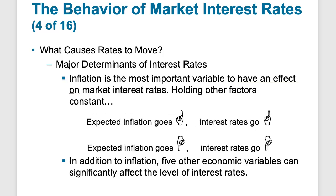The major causes for rates to move: inflation is the number one most important variable affecting interest rates. If inflation goes up, interest rates have to go up to combat it, because inflation is part of the required return. When inflation expectations go down, interest rates go down. This is also tied to the Federal Reserve — if inflation sparks in a country, the Federal Reserve will typically raise interest rates to slow the economy, which tames inflation.